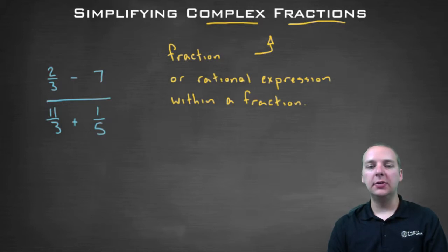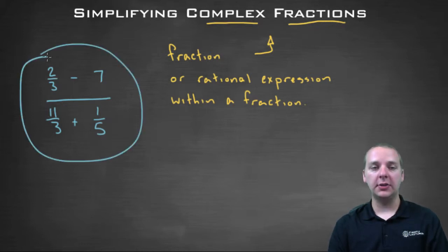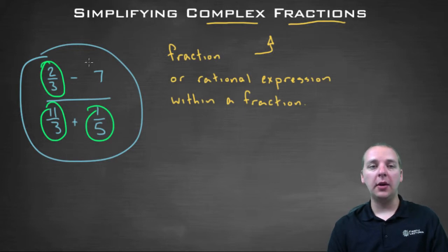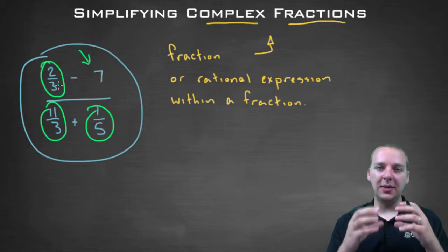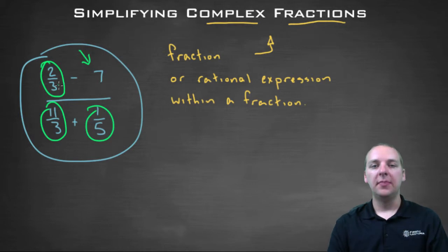Because obviously you see the large fraction here, but within that large fraction you also have these little mini-fractions in the numerator and or denominator. Not everything has to be a fraction like the seven, but you get my drift. When you have fractions inside of other fractions, that's when you have a complex fraction.